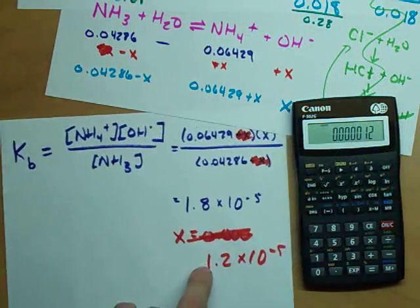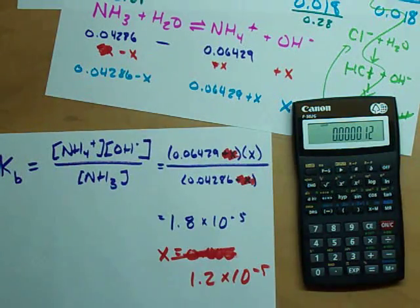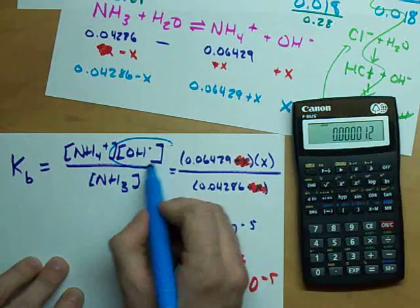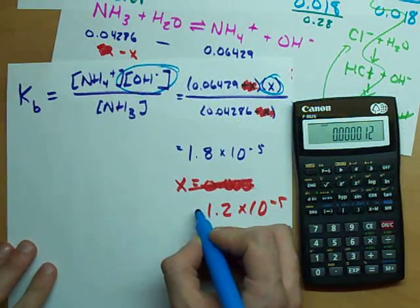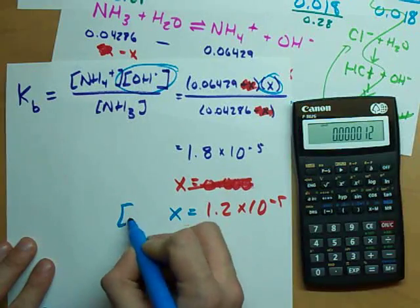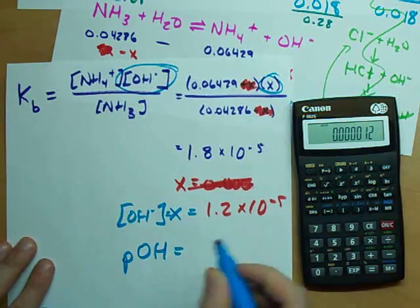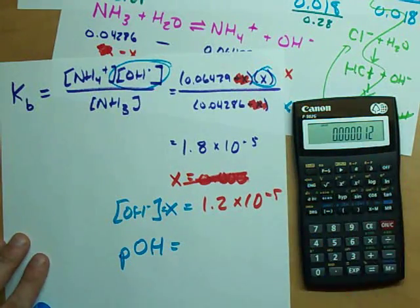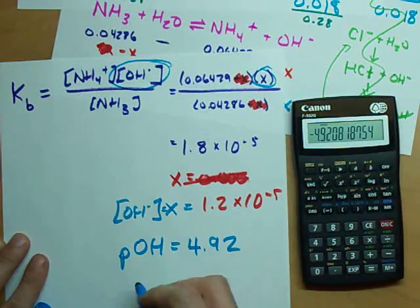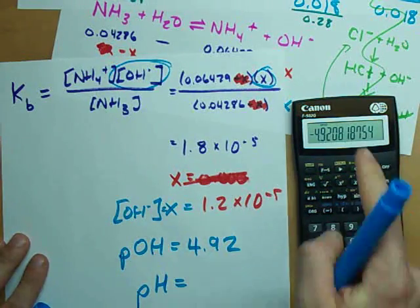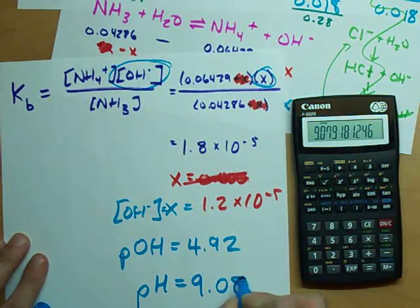I can get my pOH by taking the negative log of this, which gives 4.92, and I can get my pH by subtracting that from 14, I get 9.08. Which makes sense because I had base left over after I used up all my strong acid. I did have conjugate acid left over here, but overall the equilibrium did not change what I was left with—a pH of 9.08.